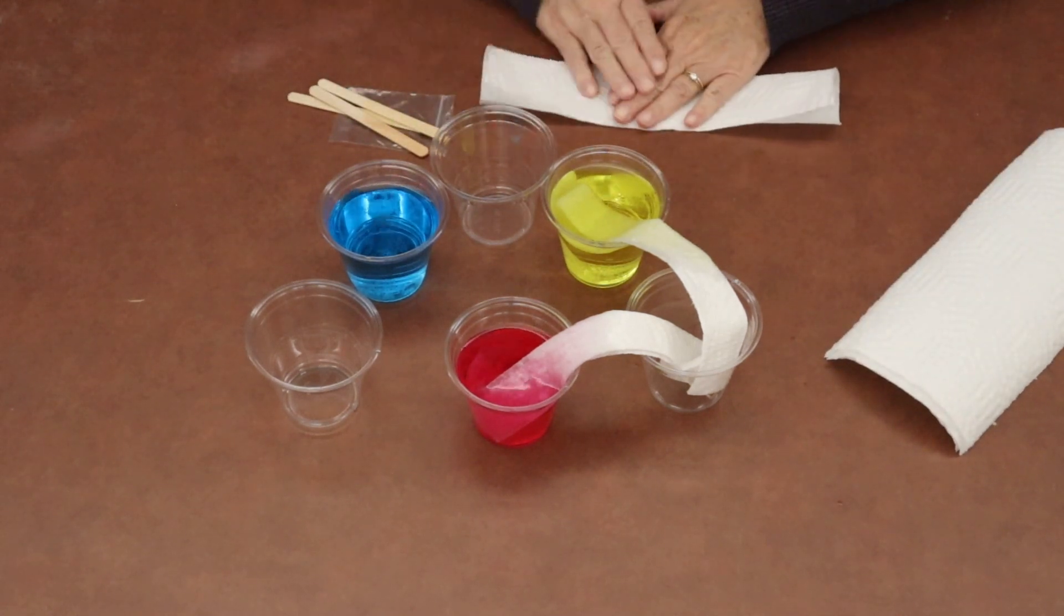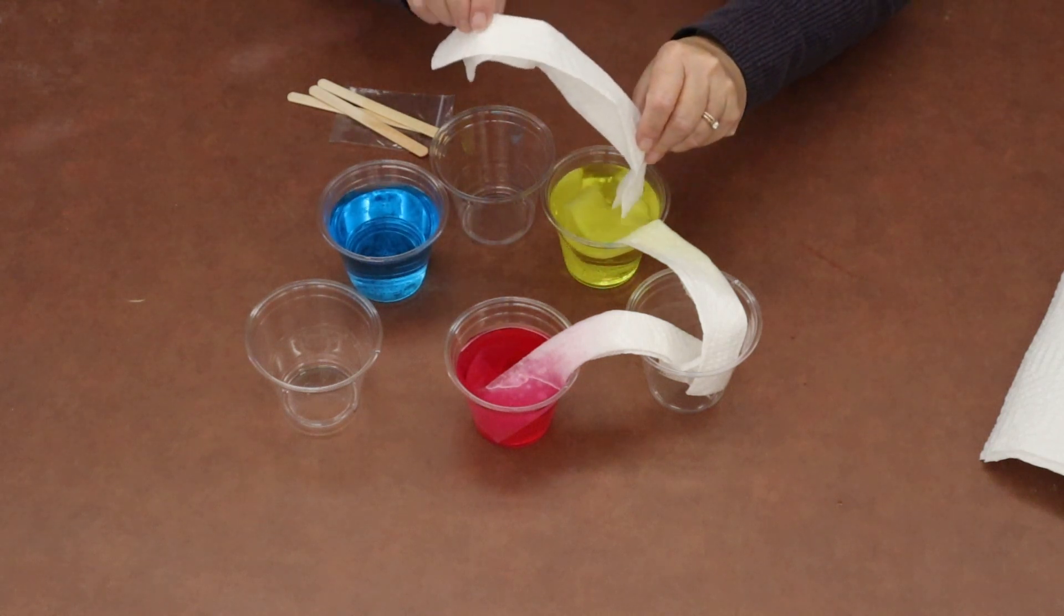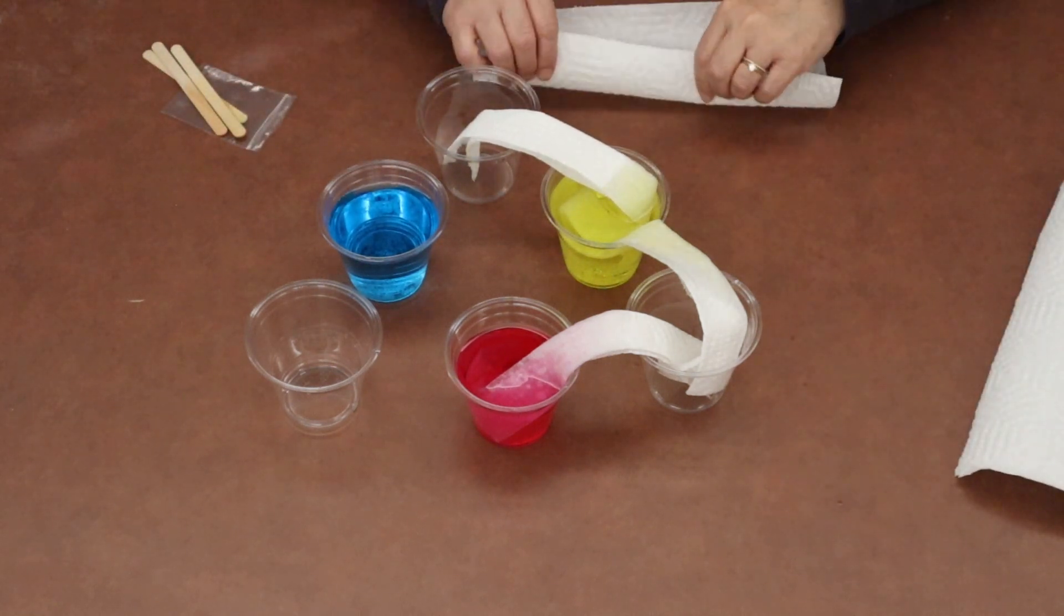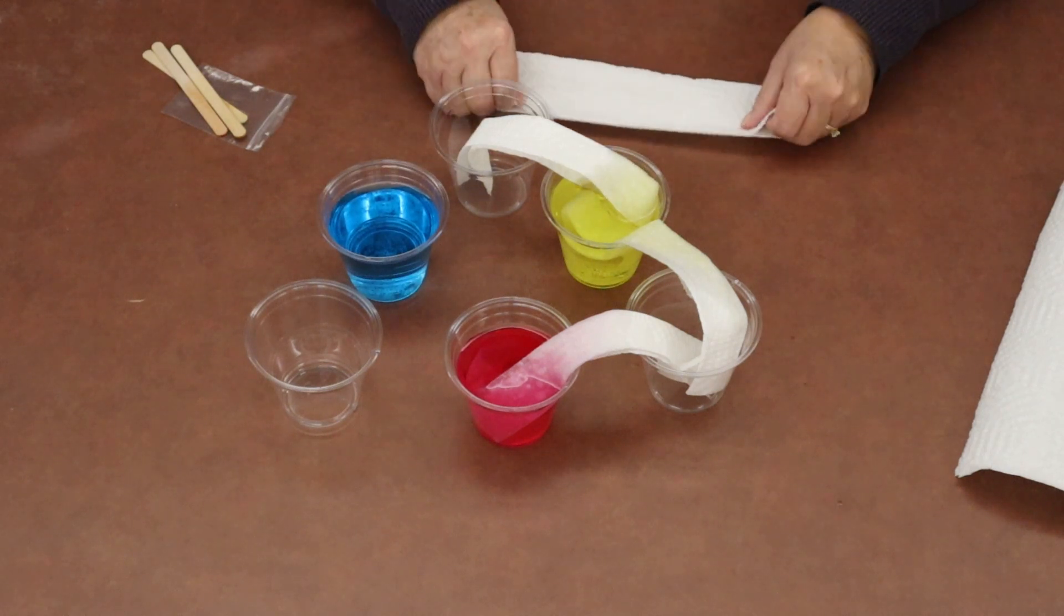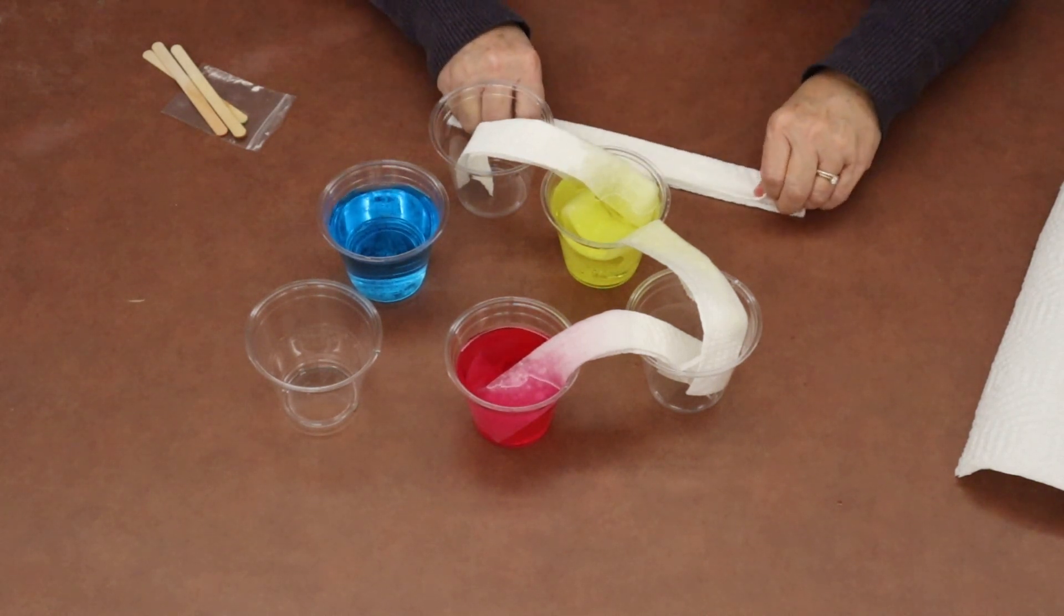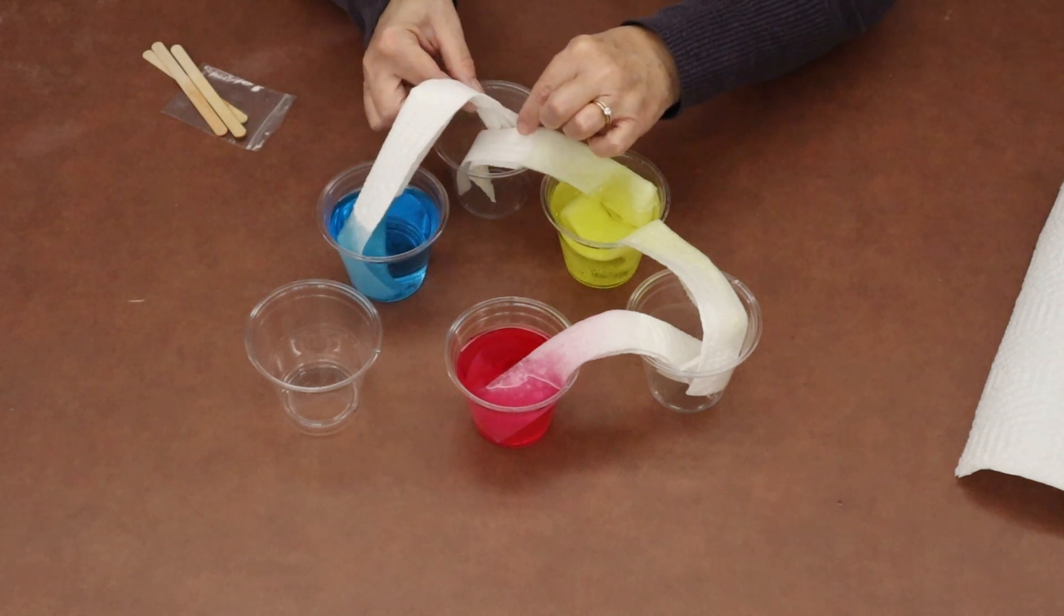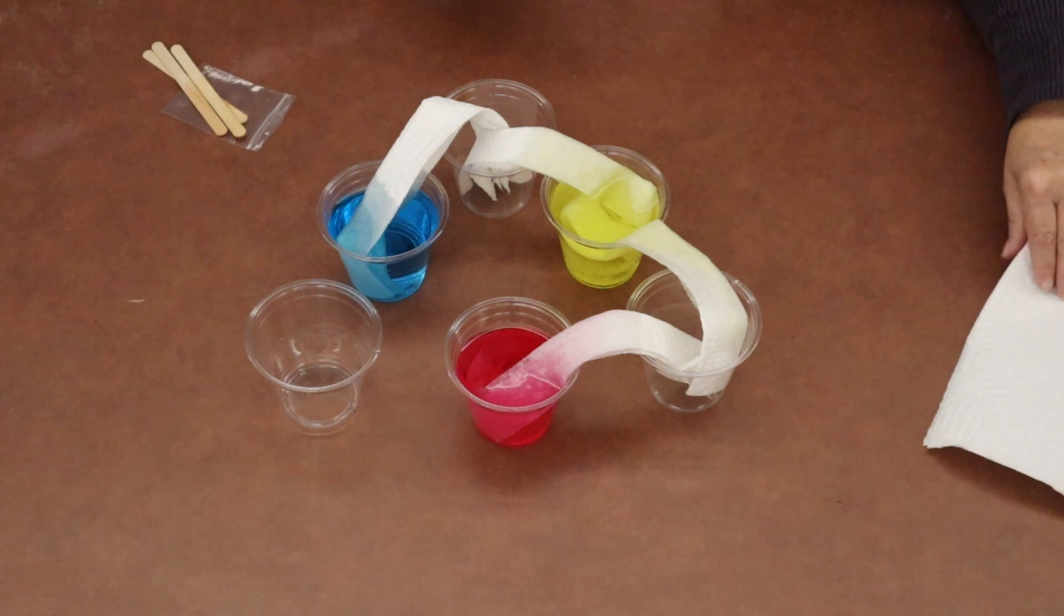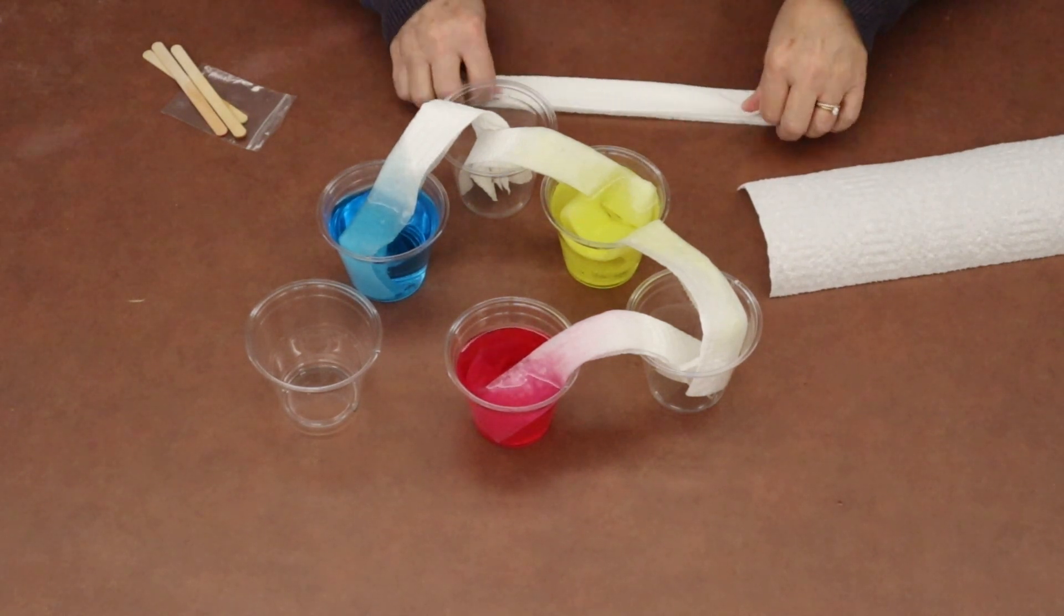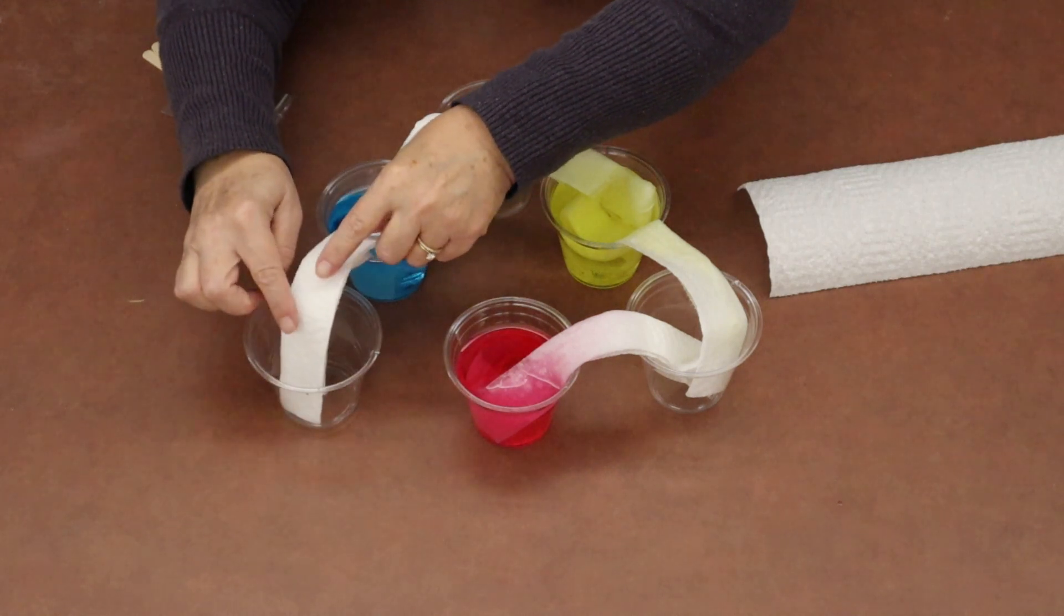So I'll take my paper towel, just fold it and fold it. Then again I'm going to stick one end in the yellow and one end in the empty cup. If it's easier to keep the cups closer together that's perfectly fine. I can see my yellow traveling down the paper towel here.